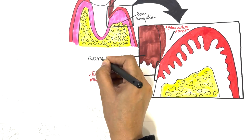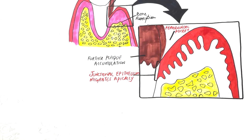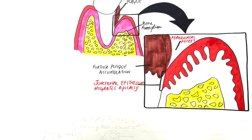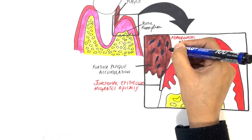This deepened periodontal pocket is a great space for further plaque accumulation which is not reachable with normal oral hygiene measures such as tooth brushing. Hence the deepened pocket becomes a favorable environment for a variety of pathogenic bacteria involved in periodontitis.